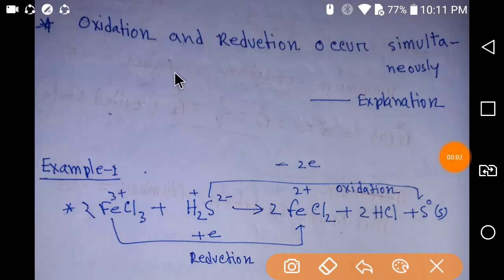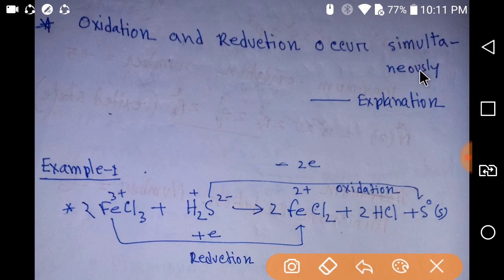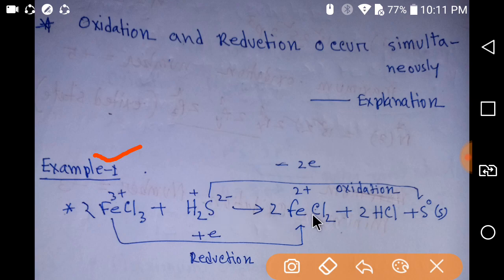Hello everyone. Now I am going to explain how oxidation and reduction occur simultaneously, with four examples. Our first example: this is ferric chloride and this is hydrogen sulfide. The reaction between these two compounds gives us ferrous chloride, hydrochloric acid, and sulfur. If you observe here, the oxidation state of